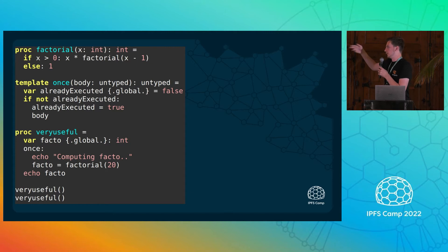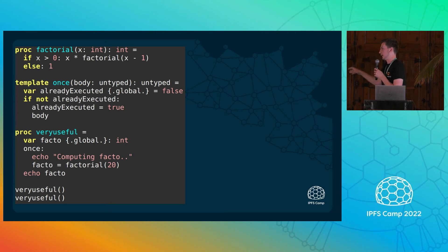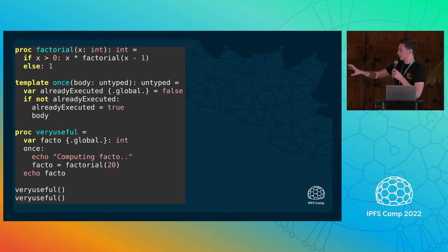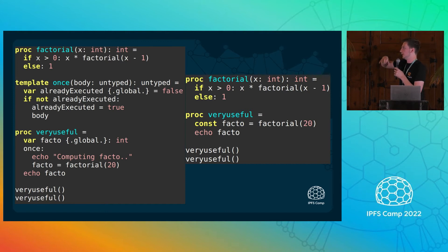Here's another example of a template that's maybe a bit more useful. I have a factorial procedure which is very expensive. I have a template called 'once' to which I can give a piece of code, and this code will only be executed once in my program. I use it in this procedure to only compute the factorial once at runtime. But actually, for this very specific example, we have an even better way to do it in Nim: you just use const. A constant variable will actually be computed at compile time — this factorial procedure will be run inside the Nim compiler VM, so the factorial function will never be executed at runtime. It's perfect for performance.